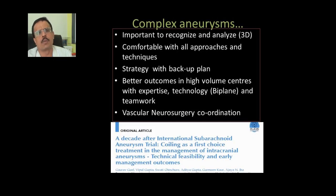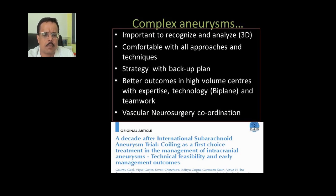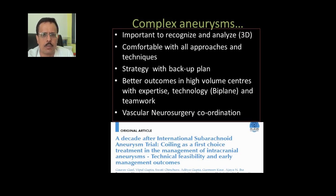In summary, for complex aneurysms in neuro intervention, it is important to recognize and analyze these aneurysms carefully, particularly on 3D imaging, and to be comfortable with all approaches and techniques. We should have a strategy with a backup plan. Better outcomes have been shown in higher-volume centers with expertise, technology, and teamwork, along with good neurosurgery backup. We have published our first 300 cases with intervention as the first approach in the Asian Journal of Neurosurgery with pretty reasonable results.